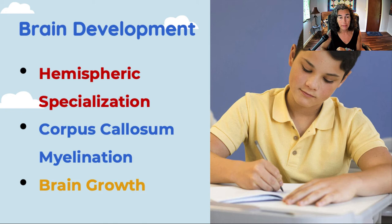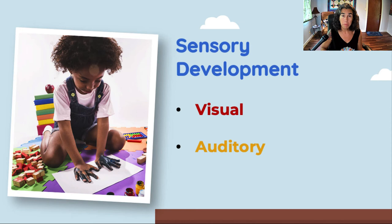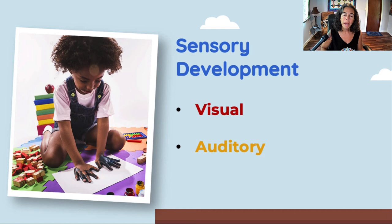Speaking of sensory development, there's a great deal of refinement across the board — proprioceptive, vestibular (feeding into motor competency), visual, and auditory. Visual acuity develops to 20/20 vision, so children are seeing very sharply unless they have a visual deficit requiring corrective lenses. Compare this with a newborn's 20/400 vision — a huge difference over just six short years.